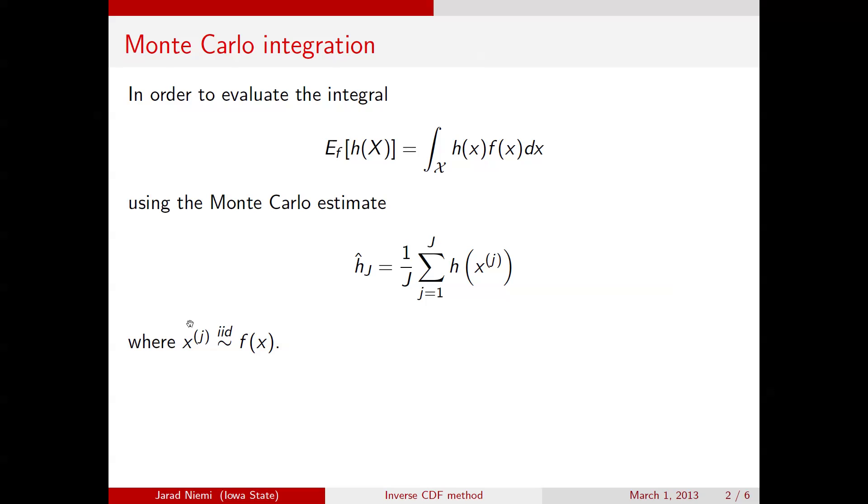And one way to provide an estimate of this integral is to draw samples from f, call those samples x_j, calculate the function h of x_j, and take the mean over all the evaluations of h, and we now have an estimate called the Monte Carlo estimate of this integral.